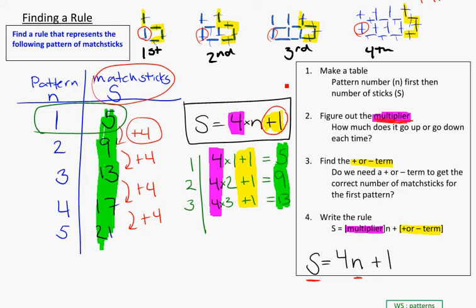In this video, we're going to take the work that we've done so far about finding a rule for a particular pattern of matchsticks. And in this case, we found the rule to be S is equal to 4n plus 1.